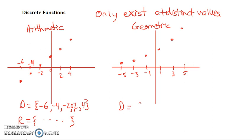then we would say the domain of this function is negative 5, negative 3, negative 1, 1, 3, 5.